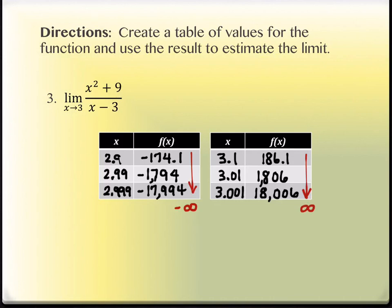So the answer here should be that the limit does not exist. It's not just because of infinities — it's because the two sides are approaching different values. They don't equal each other. If both had said positive infinity, we could say the limit is infinity. But because they don't match, we say it does not exist.